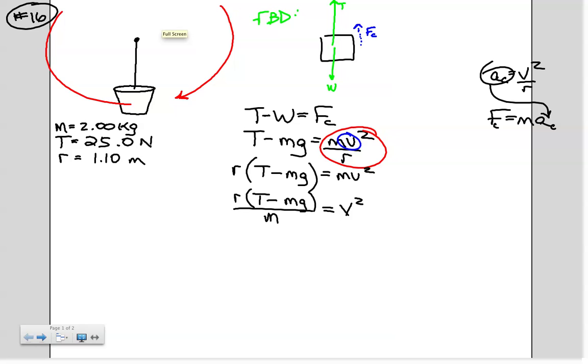Now, we can isolate the variable v by eliminating the v squared and taking the root of both sides. And ultimately, we get an expression that looks like that. Speed v is equal to the root of r times the quantity t minus mg all over m.